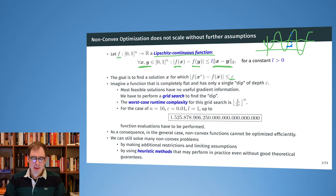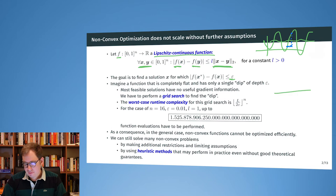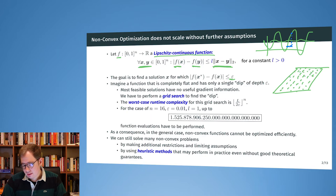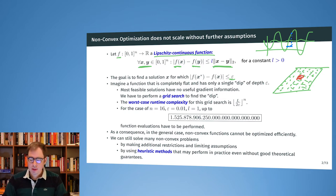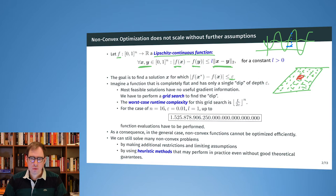We can construct a simple example: a function that is completely flat with only a small dip. In 2D we plot a grid on that function, and there is only one place where the function has a small dip going down and up again. The question is how fine-grained we need to make our grid search in order to find this dip, and this has quite dramatic growth in its runtime complexity.